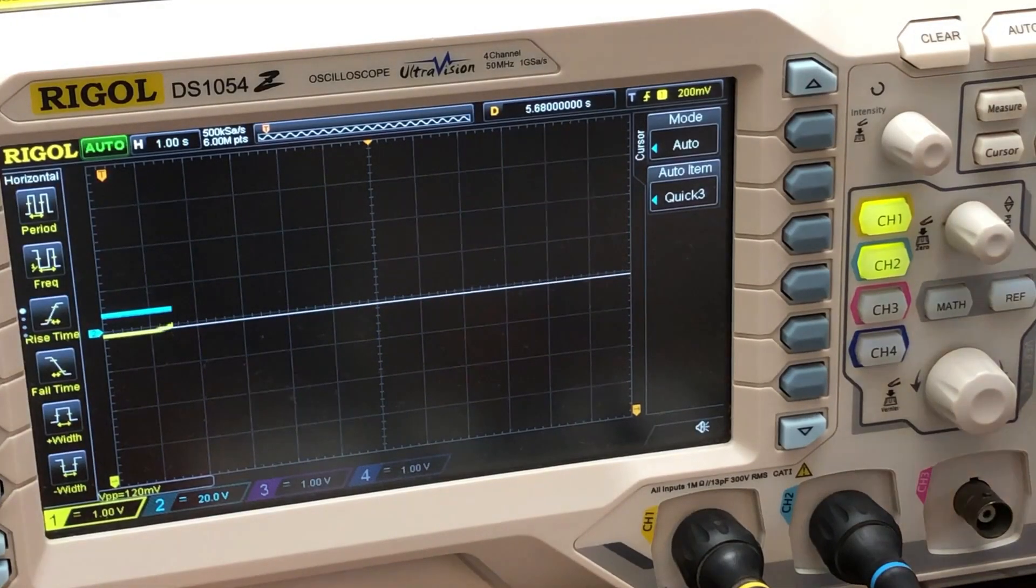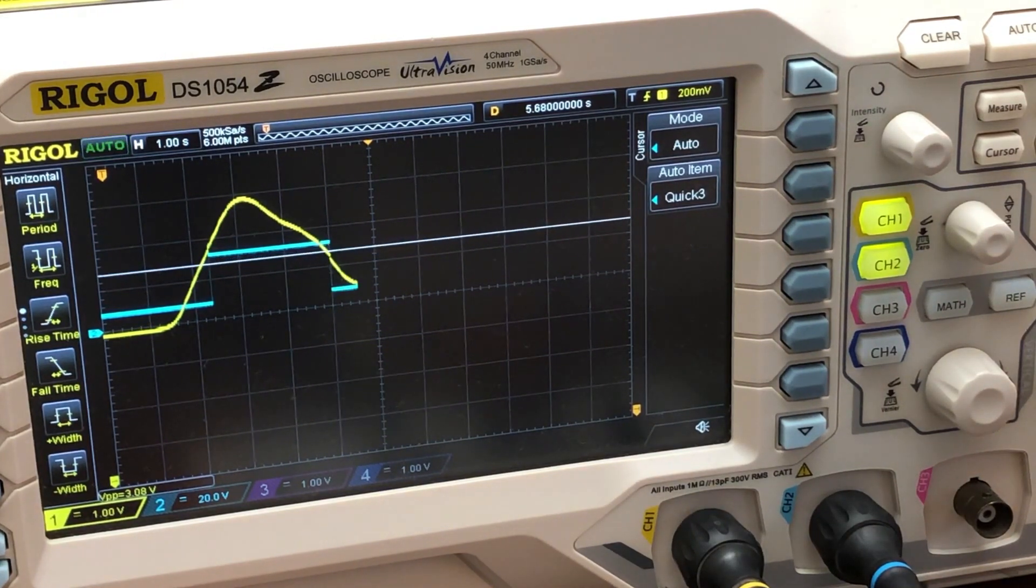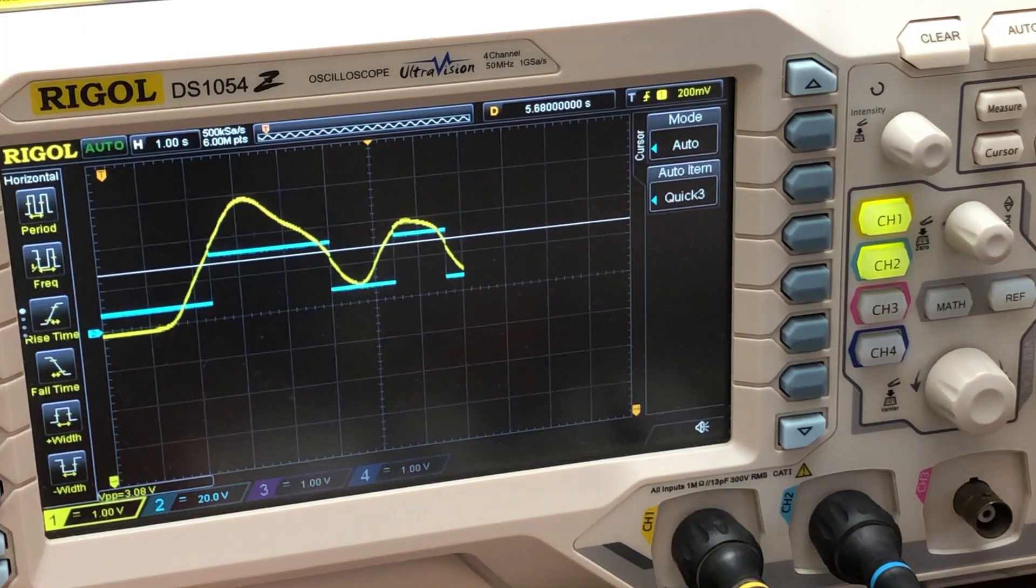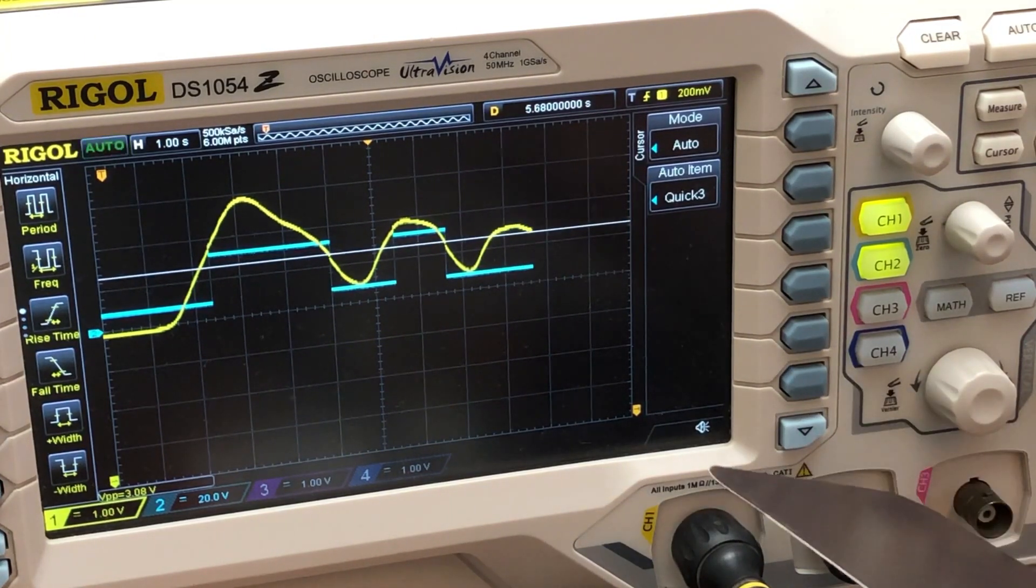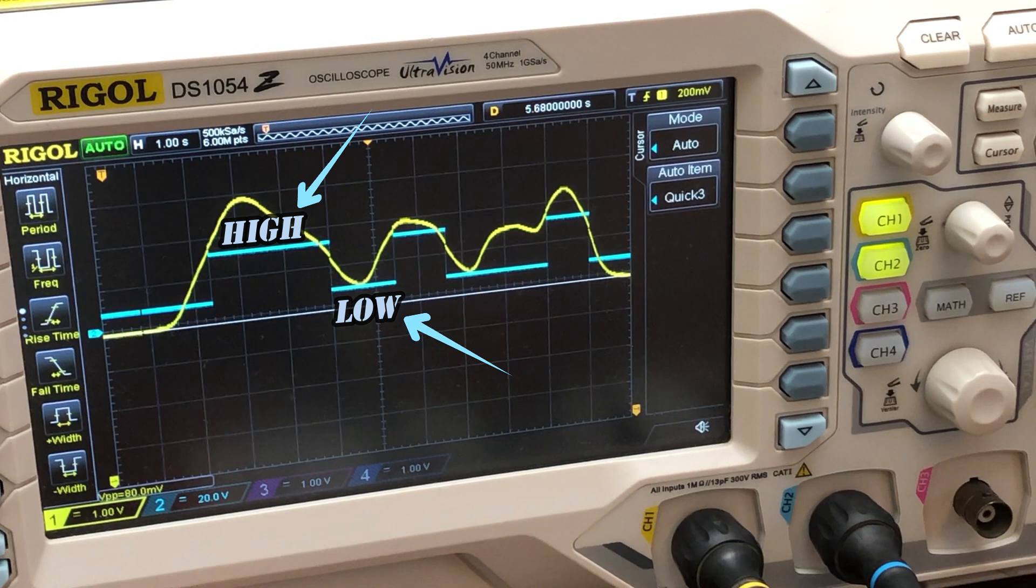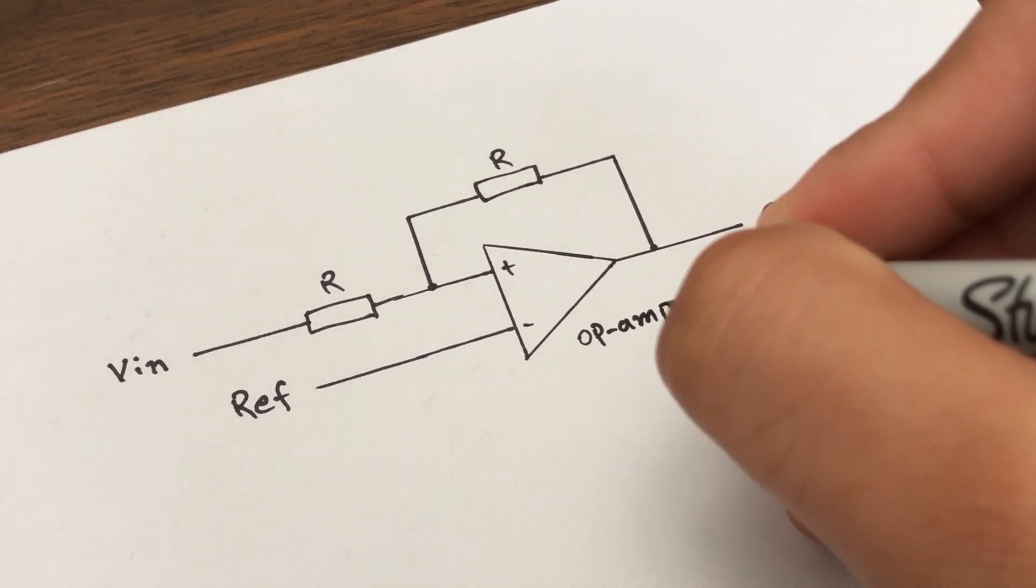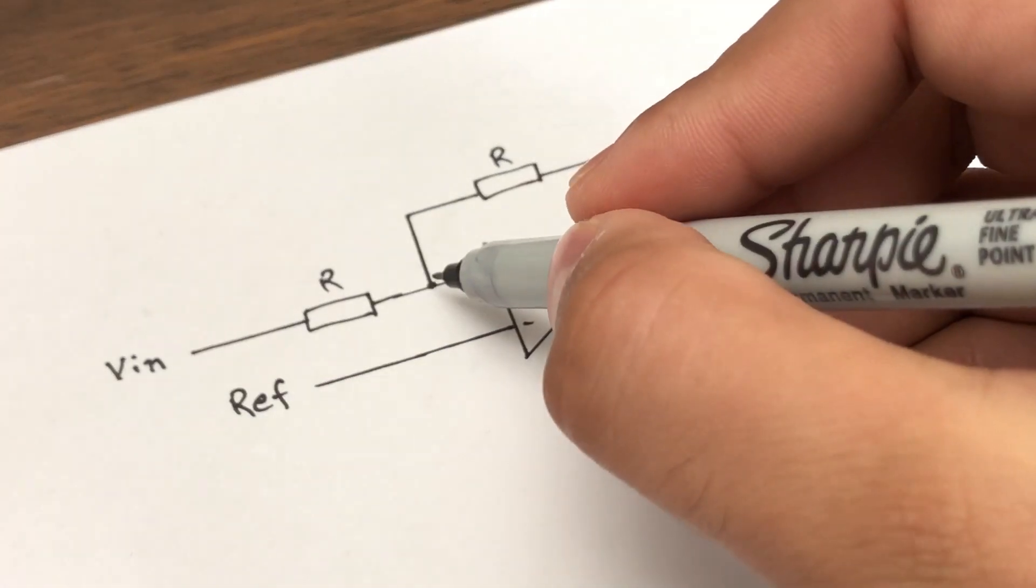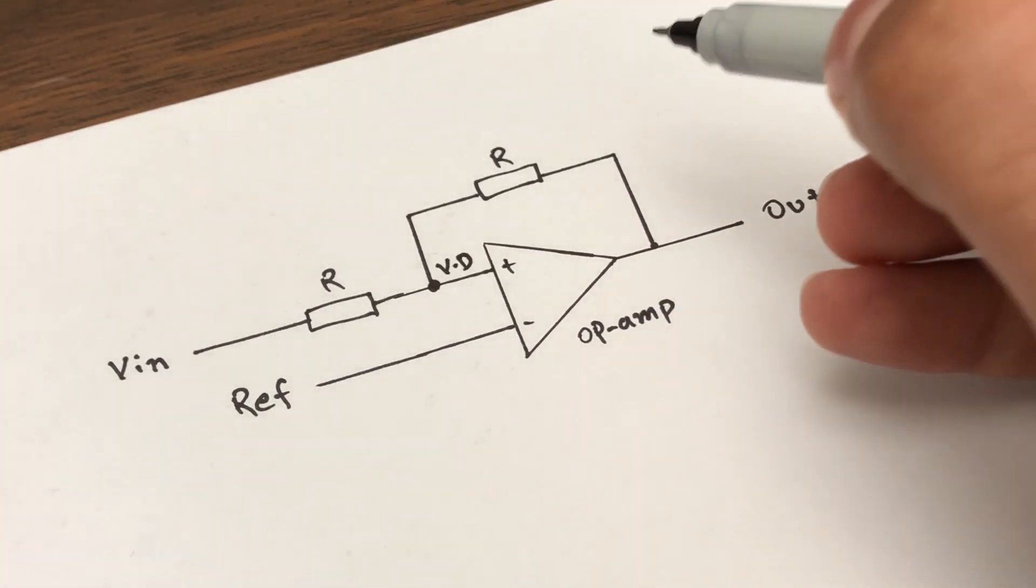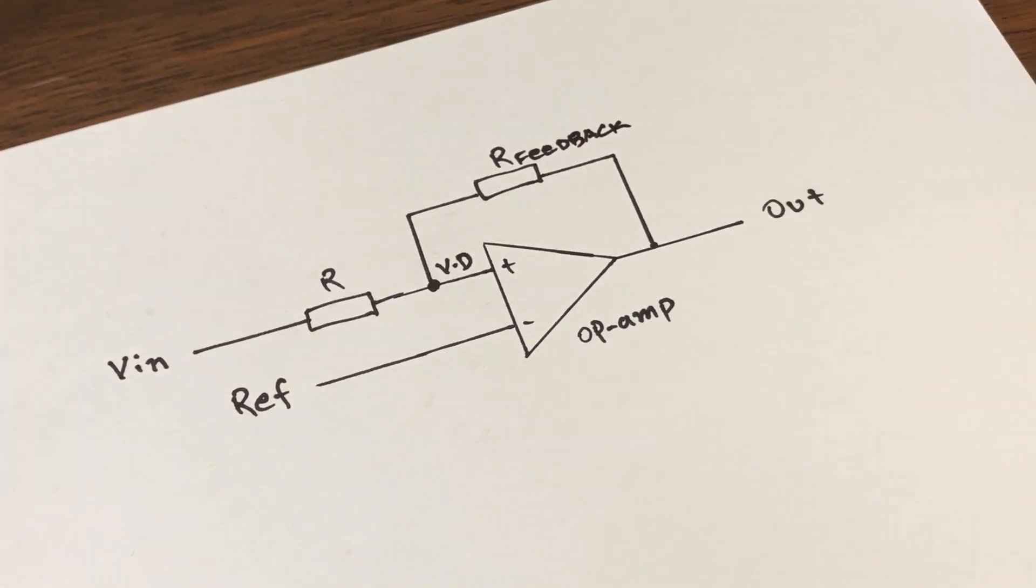A Schmitt Trigger is a type of comparator circuit that converts a non-linear input signal into a square wave output signal. It is a bistable circuit that has two states, namely high and low. The output of the Schmitt Trigger switches between these two states based on the input signal. A Schmitt Trigger consists of two resistors and one operational amplifier. The two resistors form a voltage divider and the output of the op-amp is connected back to its non-inverting input through a feedback resistor.